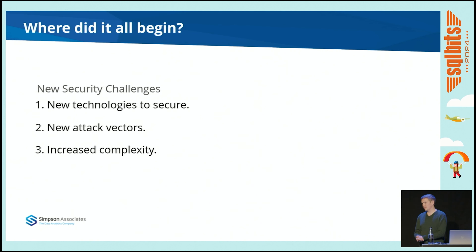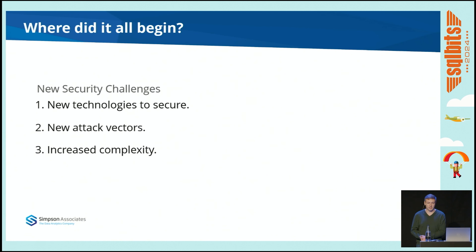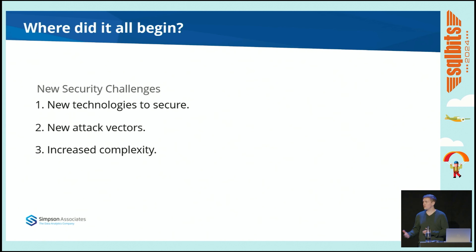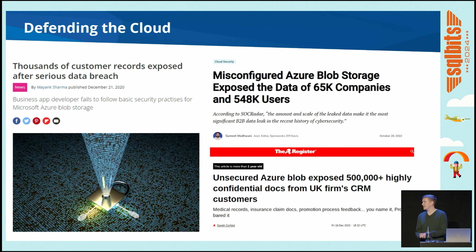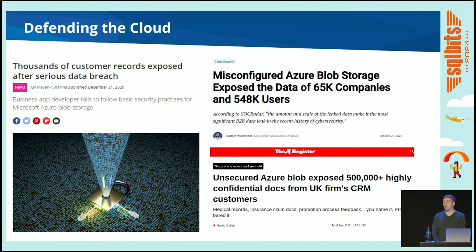With new technologies, you have to think about different ways of securing those technologies. Traditionally, how you would secure a server or a database on-prem is not going to be the same as how you would secure something on Azure or Fabric. It also introduces new attack vectors, and pairing these two things together, there's a lot of additional complexity and risk. If we don't address these risks it can be quite problematic — these are some examples of breaches that have happened involving different businesses and cloud platforms, with consequences including reputational damage and fines.